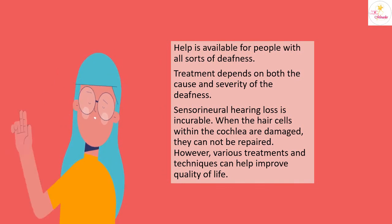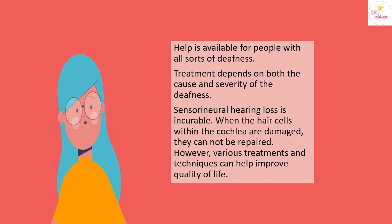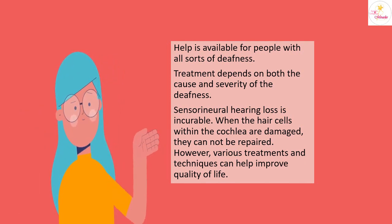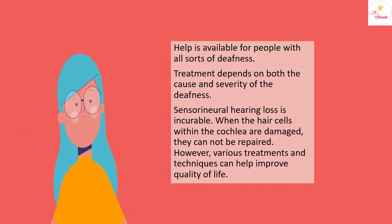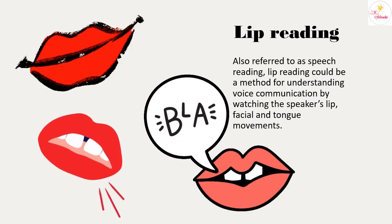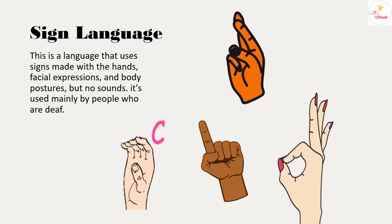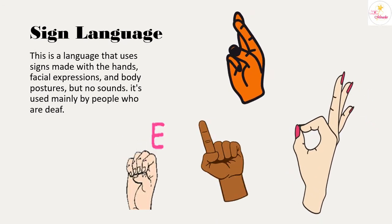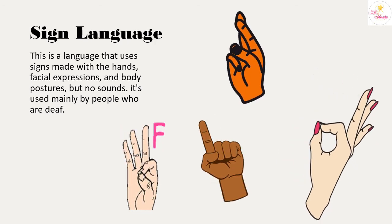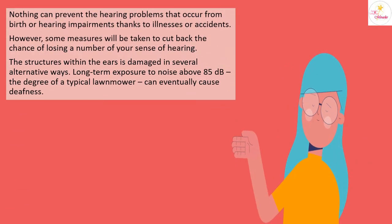Treatment is available for people with all sorts of deafness and depends on both the cause and severity. Sensorineural hearing disorder is incurable — once hair cells in the cochlea are damaged they cannot be repaired — however, various treatments and techniques can help improve quality of life. These include lip reading, also known as speech reading, which involves understanding speech by watching the speaker's lip, facial, and tongue movements, as well as sign language, which uses hand signs, facial expressions, and body postures.